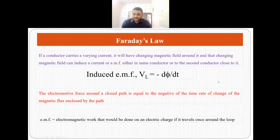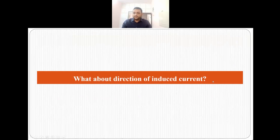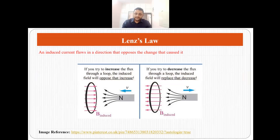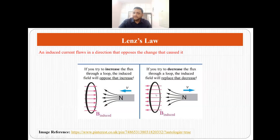Faraday's law tells us about the magnitude of EMF, but what about the direction of induced current? The direction of induced current is given by Lenz's law. It states that an induced current flows in the direction that opposes the change that caused it. If you try to increase the flux through the loop, the induced field will oppose that increase. If you are trying to decrease the flux by removing the magnet from the coil, the induced field will try to increase the flux. The induced current always flows in the direction that opposes the change that caused it.